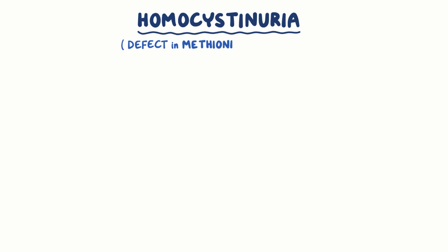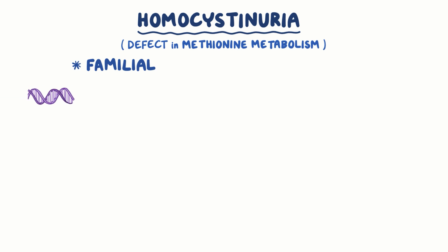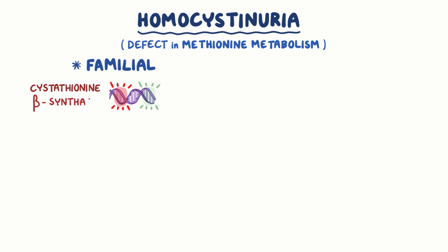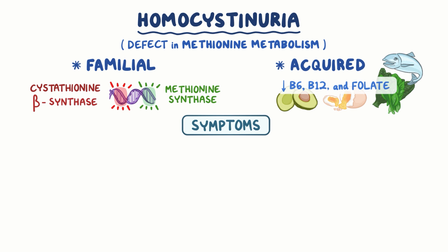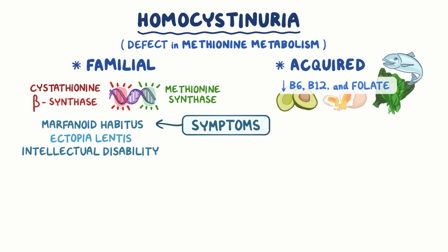As a quick recap, homocysteinuria is a disorder where there's a defect in methionine metabolism. It could be familial, where there's a genetic defect in the genes coding for cystathionine beta synthase or methionine synthase, or it could be acquired due to deficiencies in vitamin B6, B12, and folate. Symptoms of the familial form include connective tissue abnormalities like marfanoid habitus, as well as ectopia lentis, intellectual disabilities, seizures, atherosclerosis, and thrombosis.